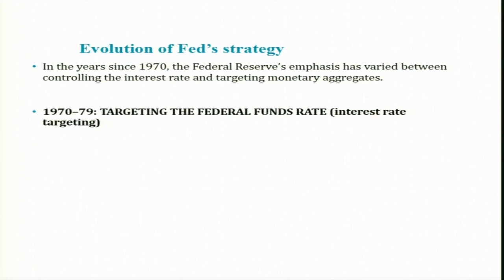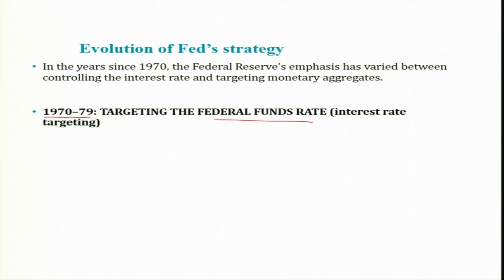From 1970 to 1979, the Federal Reserve's strategy was one of interest rate targeting. The rate targeted was the Fed funds rate. The strategy was not to fix the rate at any one value for a long period of time — the Fed funds rate was reconsidered at each FOMC meeting, which occurs 8 times a year, and adjusted as deemed necessary in light of the state of the economy.